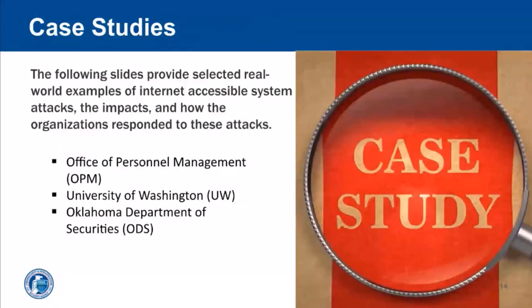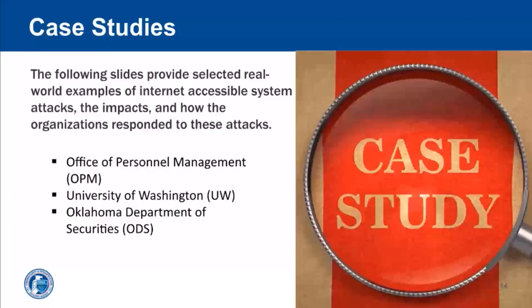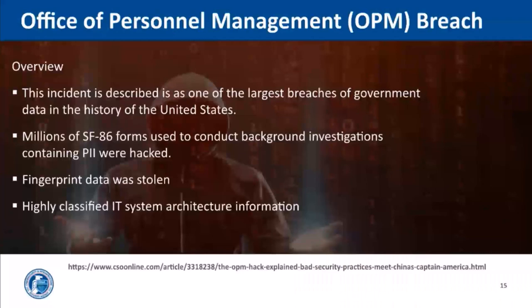Now let's talk about some case studies — real-world examples of internet accessible system attacks. We'll talk about the impacts and how the organizations responded. We have three case studies: the first one is OPM, which is the Office of Personnel Management; the second case study is the University of Washington; and the last one is ODS, the Oklahoma Department of Securities.